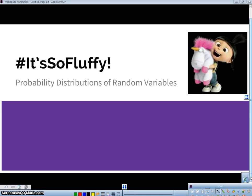Hello folks, this is Mr. Measis here, and I call this one It's So Fluffy. If you remember that, that's from Despicable Me. And really what we're going to talk about, and I'll use the idea of a carnival game, to talk about the probability distributions of random variables. We're going to stick with the discrete random variable in this video, and I'll talk about continuous random variables later on in a different video.